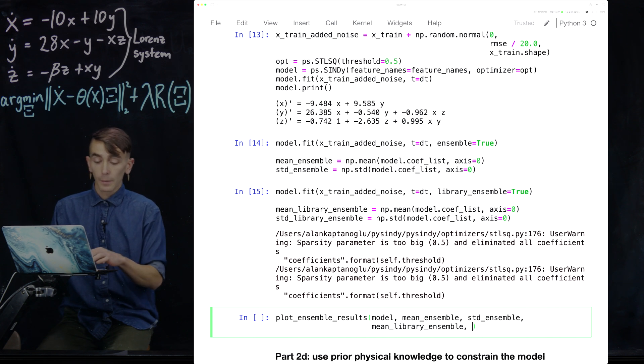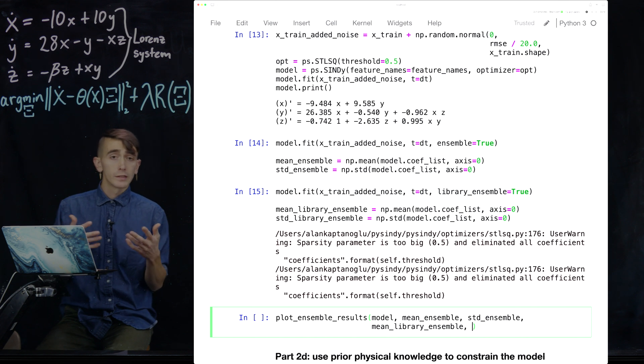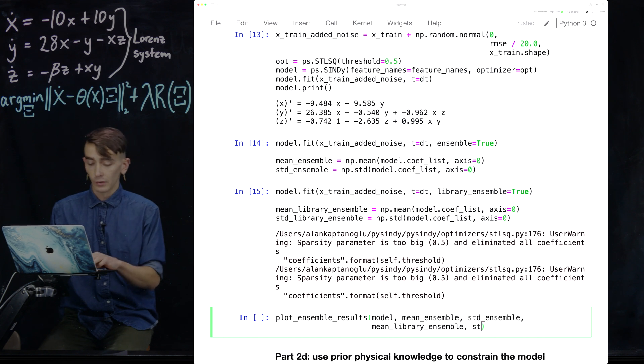So we're just comparing how the performance was on this noisy Lorenz data with the ensembling methods and the library ensembling methods. And you're going to see these are useful things to look at.